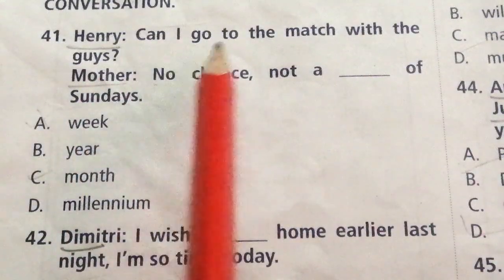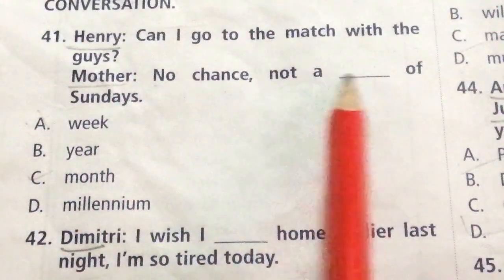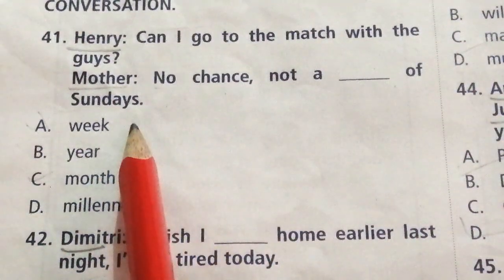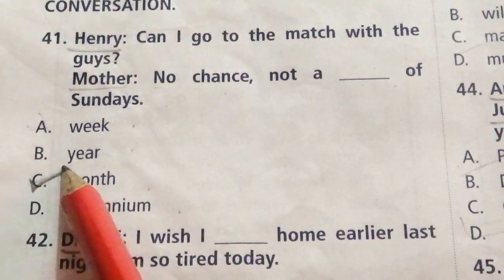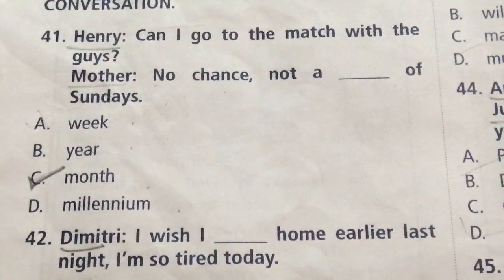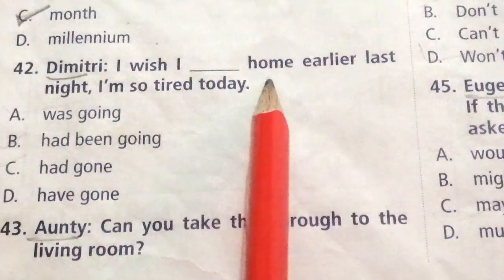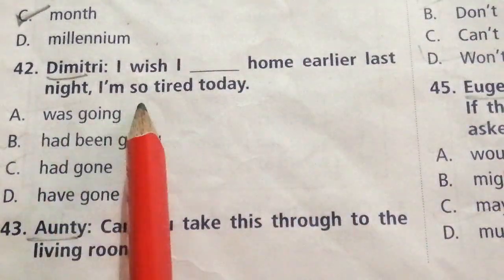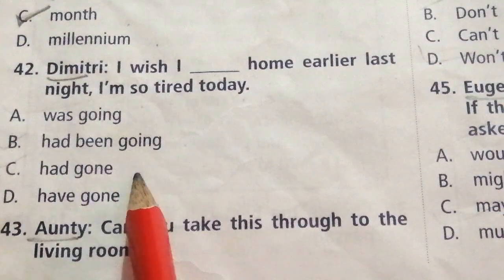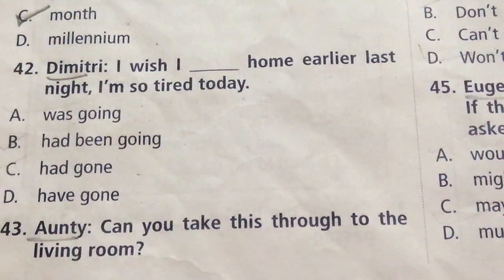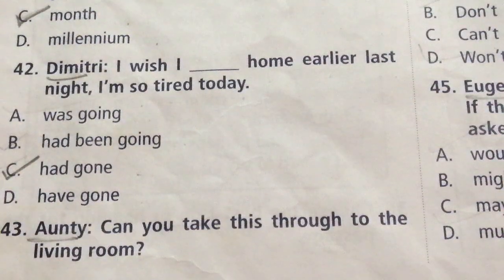Question 41 — Henry: Can I go to the match with the guys? Mother: No chance, not a dash of Sundays. Options: Week, Year, Month, Millennium. The answer is C: Month. No chance, not a month of Sundays. Question 42 — Dimitri: I wish I dash home earlier last night, I am so tired today. Options: was going, had been going, had gone, have gone. The answer is C: Had gone. I wish I had gone home earlier last night.